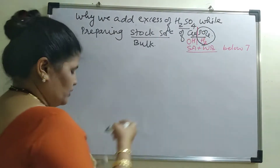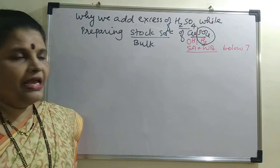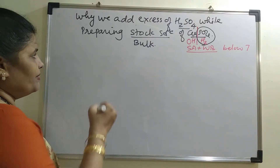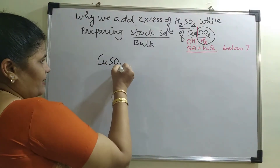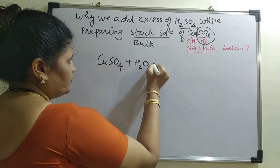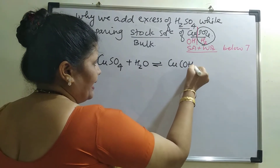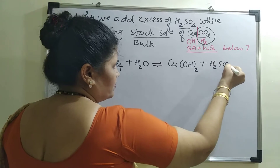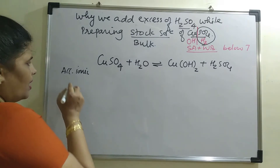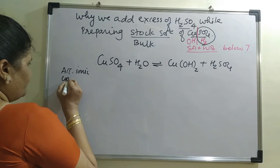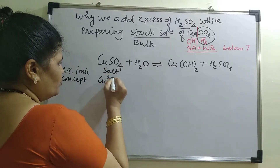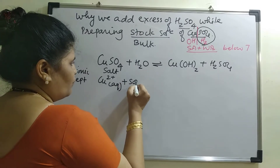Let us now see how the splitting takes place and what actually happens when a copper sulfate solution is prepared. Taking the concept of Arrhenius: when copper sulfate is added to water, you get copper hydroxide and H₂SO₄. According to the Arrhenius ionic concept, being a salt, it will dissociate to give Cu²⁺ and SO₄²⁻.